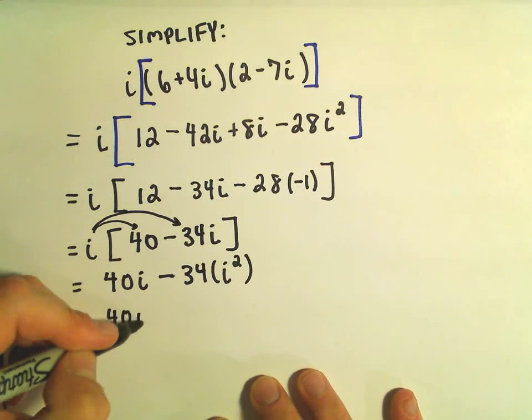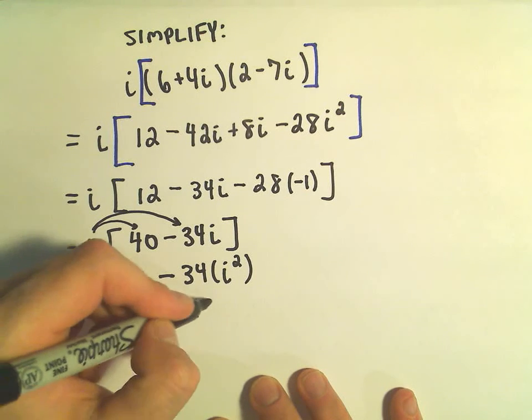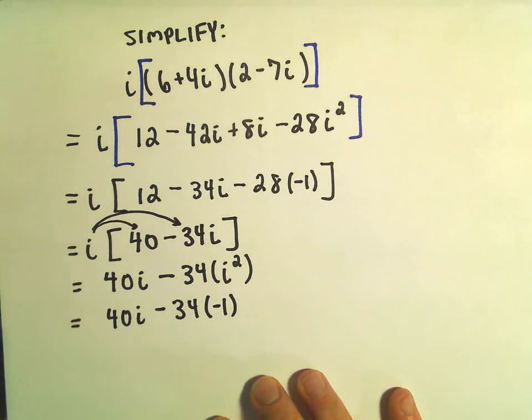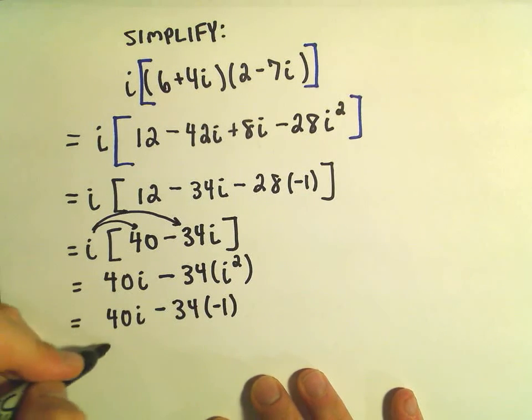And then our negative 34, we have an i times an i which is i squared. So again, we can use this trick one more time that i squared is equivalent to negative 1. So really we have 40i plus 34.